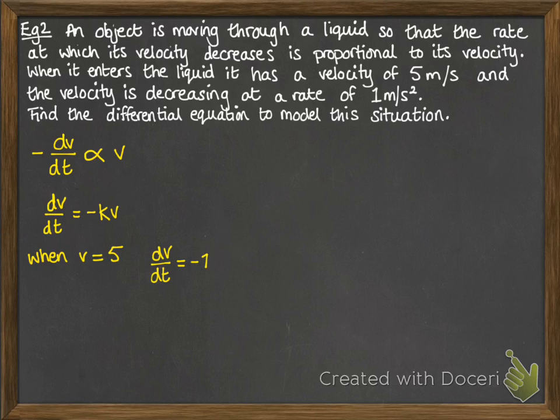So when the velocity is 5, we're told that the rate of the velocity decreasing is minus 1. So that's the information given to us in the question. So then put that into our equation of dv by dt is equal to minus kv. So if dv by dt is minus kv and v is 5, that would be minus k times 5. That's equal to minus 1, which gives us the value of the constant k being a fifth.